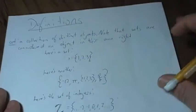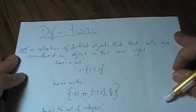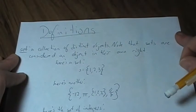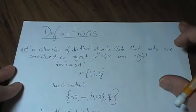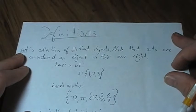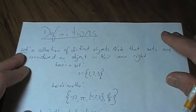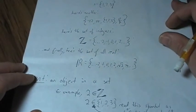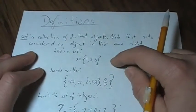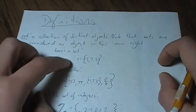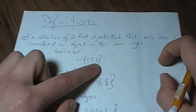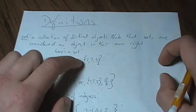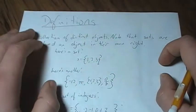Let's start with some basic definitions. Cantor's work is inherently set in set theory, so you need to know a little bit about that before moving on. A set is simply a collection of distinct objects. Note that sets are considered an object in their own right. An element is an object in a set. Here's an example: the set is called S and it contains the elements 1, 2, and 3. You write them separated by commas in brackets — S equals its set.